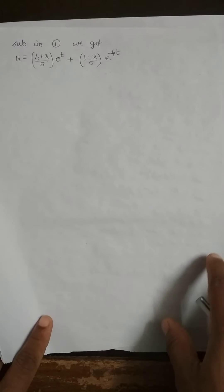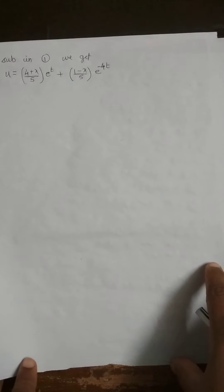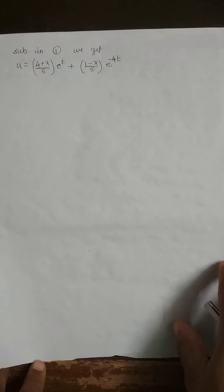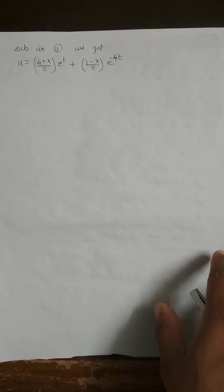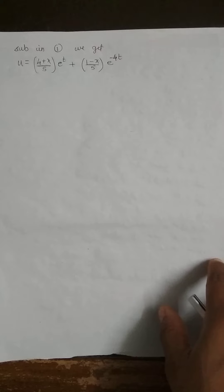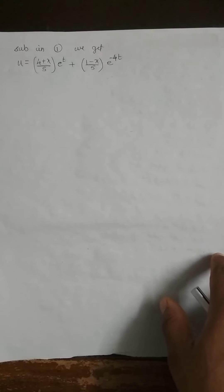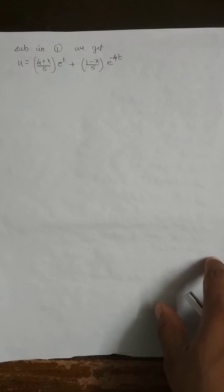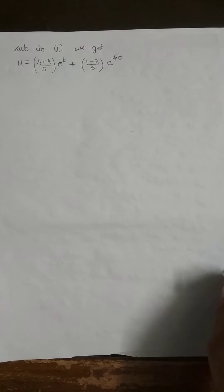This is very easy. Whenever you have a partial differential equation in which the dependent variable is differentiated with respect to only one independent variable, convert the PDE to an ordinary differential equation and simplify as usual. Thank you.